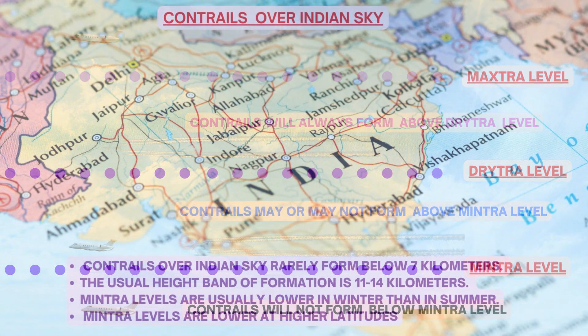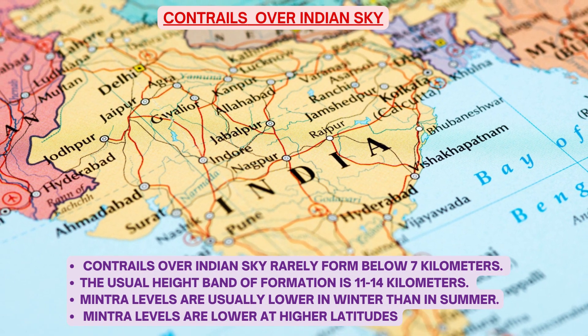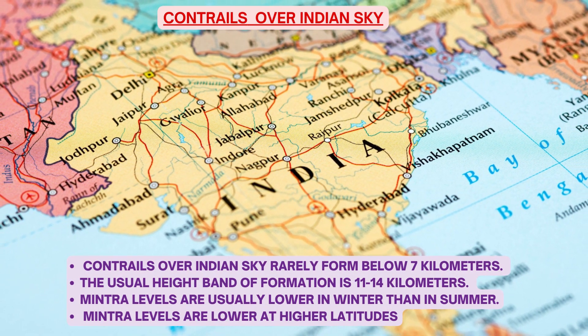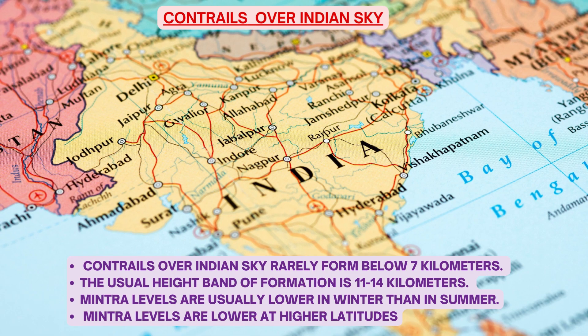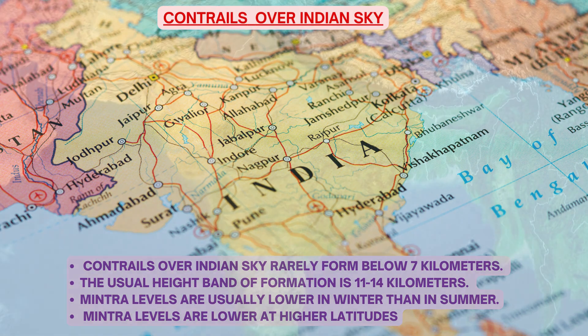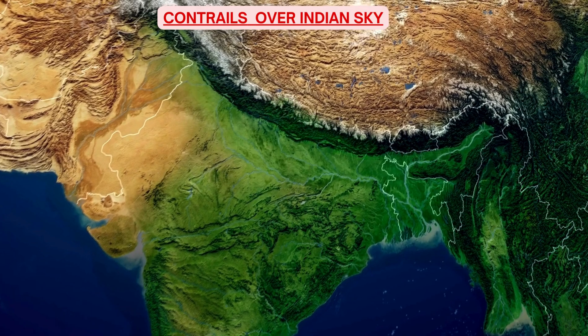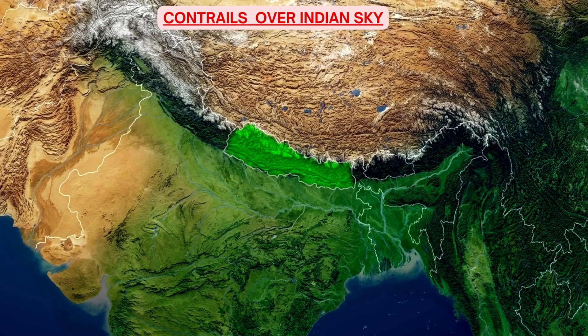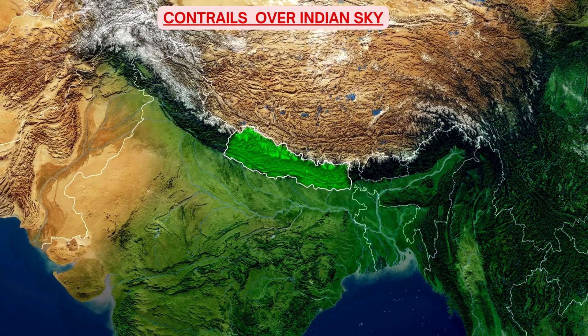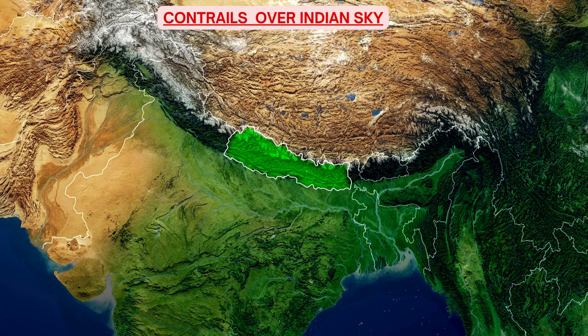For jet aircraft over Indian skies, contrails rarely form below 7 kilometers. The usual height band for contrail formation is 11 to 14 kilometers. Mintra levels are generally lower in winter than in summer, and lower at higher latitudes. In extreme northern India, the mintra level in winter may occasionally be below 9 kilometers.